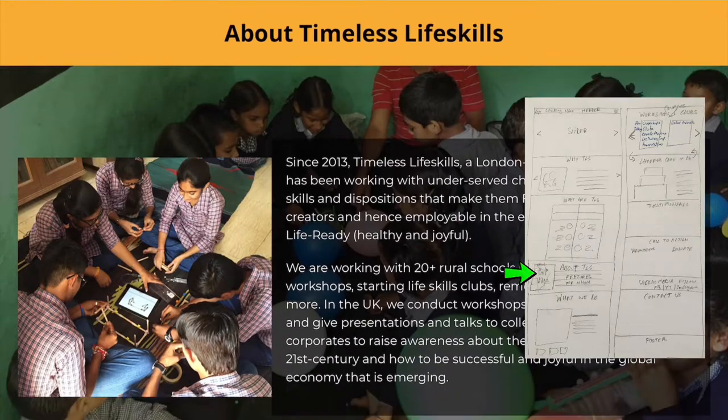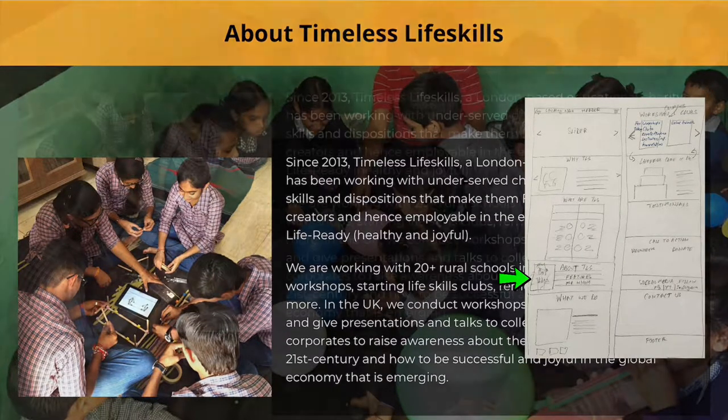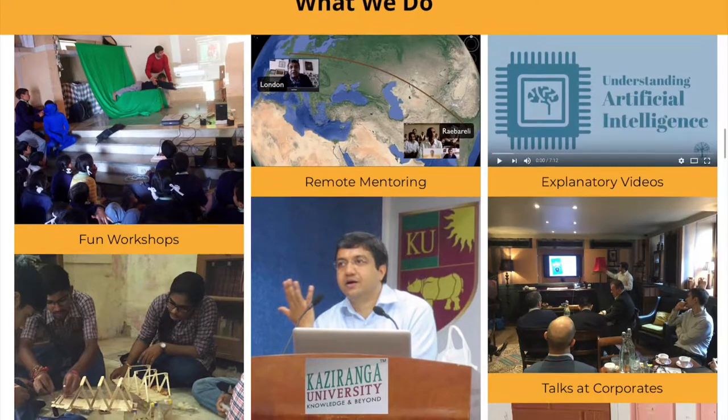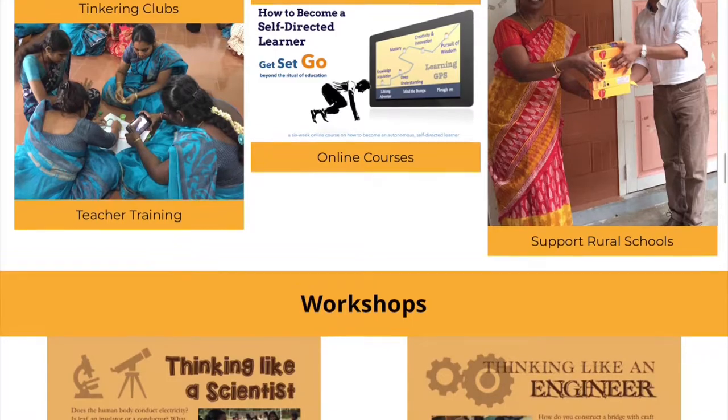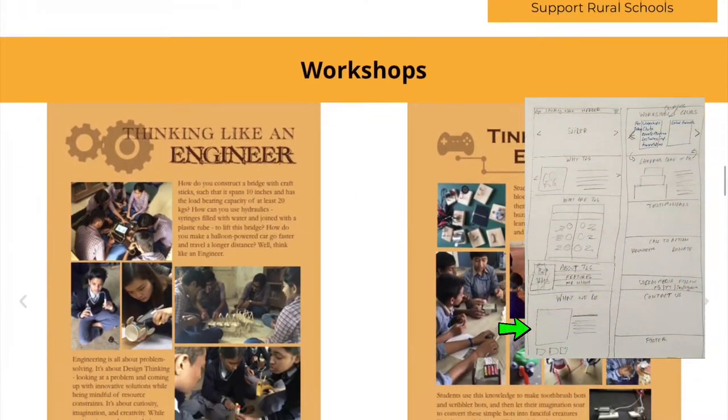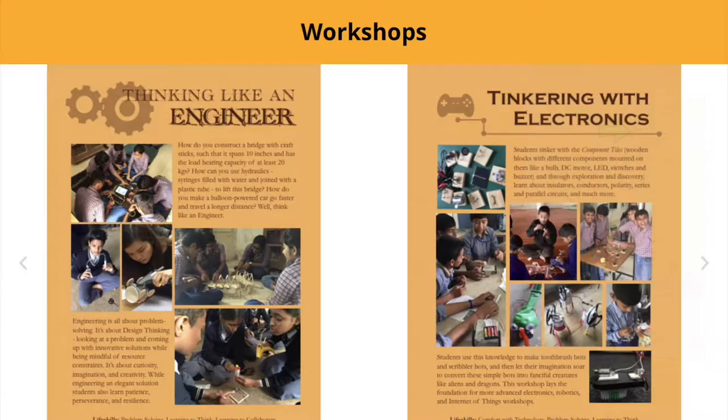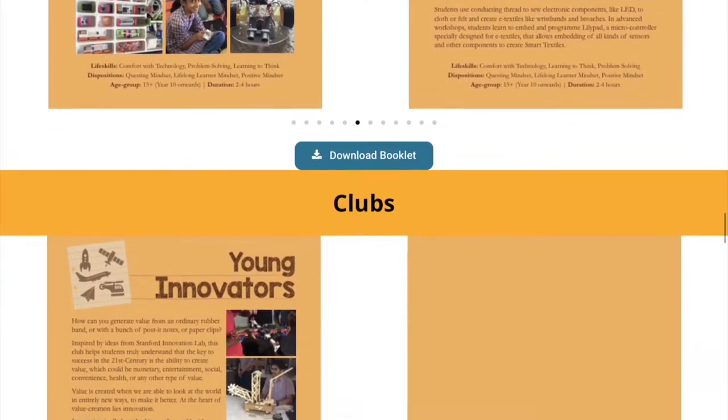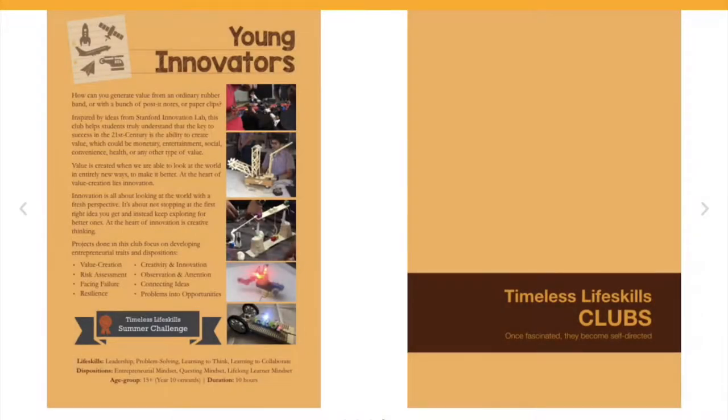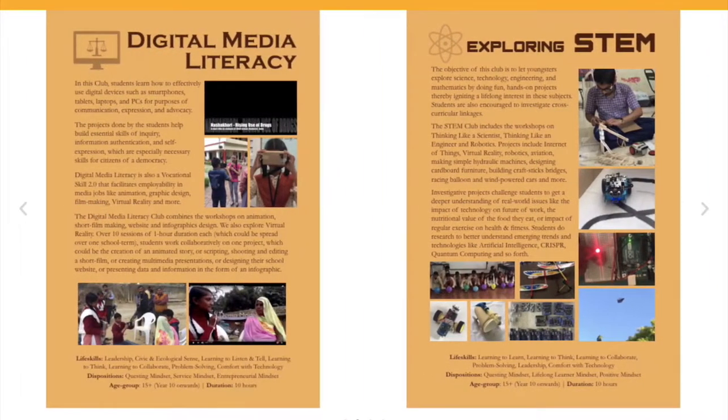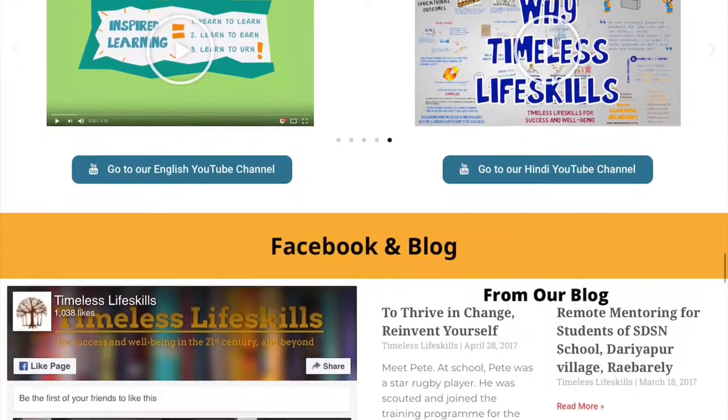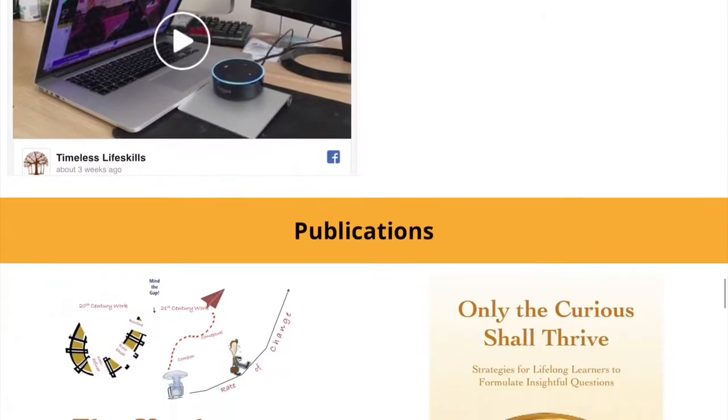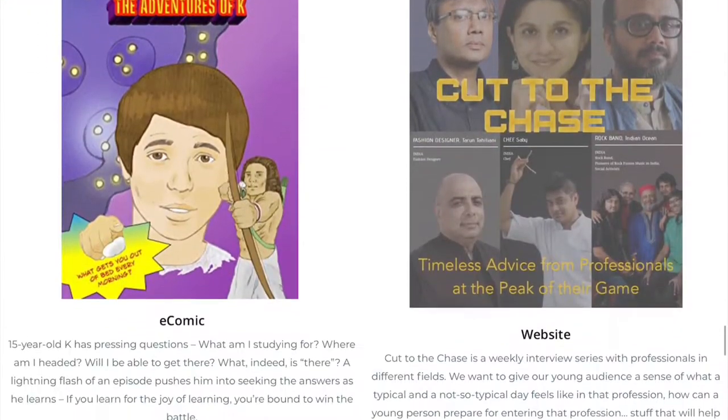Then we have a section on about Timeless Life Skills, what we do: workshops, remote mentoring, videos and courses, lectures, teacher training, and so forth. And here is a sense of the work that we have been doing, the workshops that we conduct. Then there is information about the clubs that we run, like the Young Innovators Club or the STEM Club or the Digital Media Literacy Club, of which this website making tutorial is a part. Then we've got a YouTube channel, Facebook, blog, publications, ebooks, e-comics, etc.